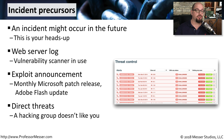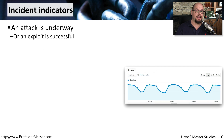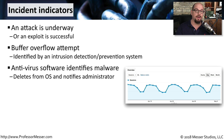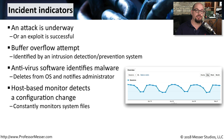In some cases, you may be told directly that a particular group is going to attack you, especially if your organization is very public or you have a group of people that don't like you — they may tell you they're going to try to bring down your systems. There are also indicators that can tell us an incident is underway or that an exploit is successful. One indicator might be buffer overflows identified through an intrusion prevention or intrusion detection system. If your antivirus systems are identifying malware, you want all of those logs sent to a central place so the administrator can notify everyone. You might also have monitors on your host to determine if any major changes occur or if anybody modifies any files, which can alert you that something is either going to happen or is already underway.